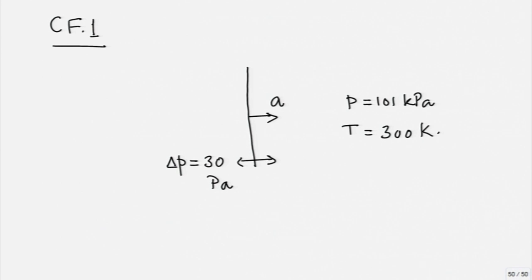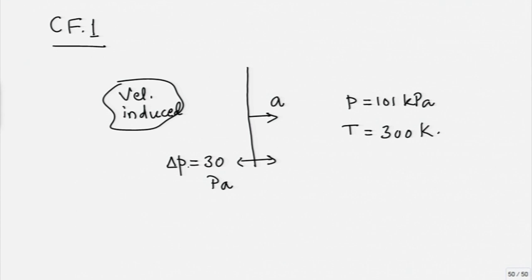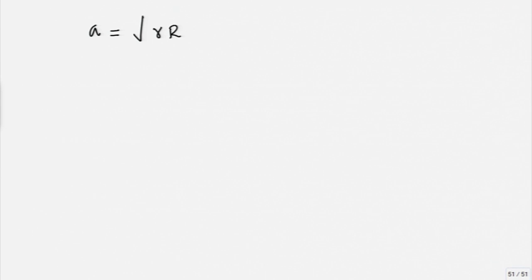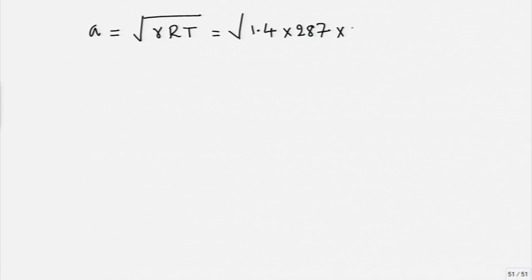What we have to find out is the velocity that is induced, and also the temperature change across the wave. These are the two things required to be found. One way of doing this is as follows: A, the speed of this sound wave, can be found using the square root of gamma R T, which is the square root of 1.4 times R for air (287) times the temperature 300 Kelvin. Once this is known, you can find out the speed with which this sound wave is moving.